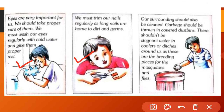We must trim our nails regularly because long nails are home to dirt and germs. Our surroundings should also be kept clean and garbage should be thrown in a covered dustbin. We should ensure that water does not stagnate near the house so that mosquitoes and flies cannot breed there.